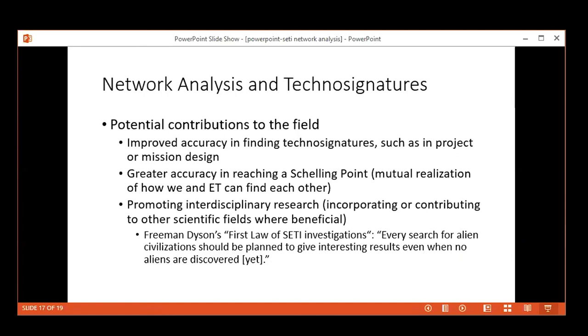Contributions to the field include improved accuracy in finding technosignatures, greater accuracy in reaching a Schelling point—the mutual realization of how we and the ET can find each other. If they're doing network analysis and we're doing it, there's getting closer to a Schelling point. Also, it's promoting interdisciplinary research from various fields. A corollary to that, especially if you're talking not just about SETI but in an interdisciplinary context, is Freeman Dyson's first law of SETI investigations: every search for alien civilizations should be planned to give interesting results even when no aliens are discovered. So it's not just for SETI, which is a key purpose, but if there are other scientific contributions outside of SETI that it can help, that's a plus too.